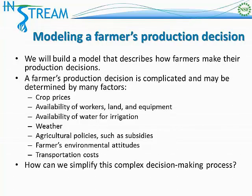Thinking about all of these different factors at the same time and analyzing a farmer's production decision is going to be very overwhelming for us. We're not going to be able to include all of these factors in a simple model that can help us understand how farmers make decisions. So an important question is: how can we simplify this complex decision-making process so that we can build a model that we can actually learn something from?